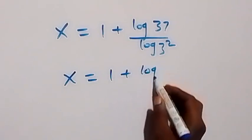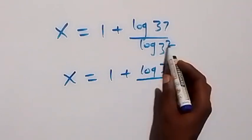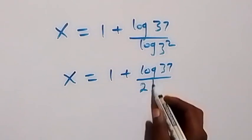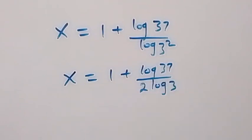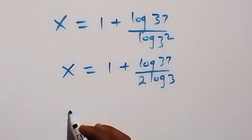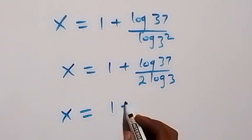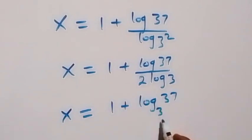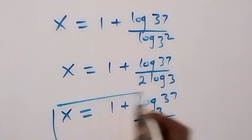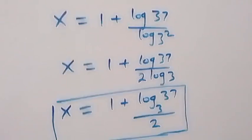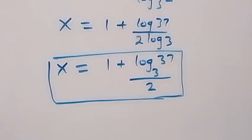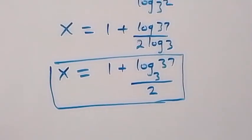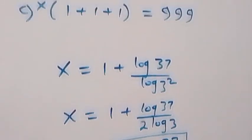Applying the power law, log(3²) becomes 2·log(3), so we have x equals 1 plus log(37) over (2·log(3)), which equals 1 plus log₃(37) over 2. This is the value of x in the given problem.